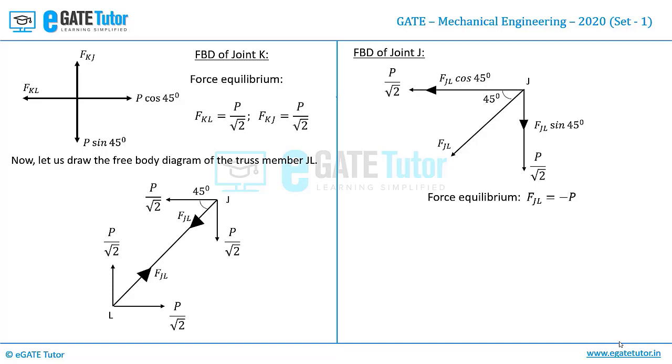The buckling load according to Euler's theory in columns and structures is π²EI/L², but given that the flexural rigidity of the member JL is 4EI and its corresponding length is √2L, substituting that will give us 2π²EI/L². This is the correct option and it matches with option C.